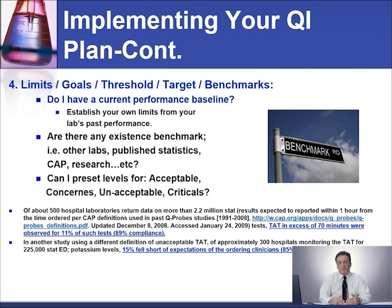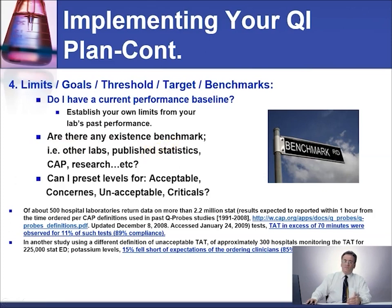Increase it to 75, then to 80, then to 90, until you reach your goal. Are there any existing benchmarks from the accreditation body or universally known ones? For example, blood culture contamination is 3% or less. You can go lower, but you cannot go higher than that — you must comply. Even if your baseline is 10%, you need to keep your benchmark for blood culture contamination at 3%.